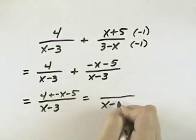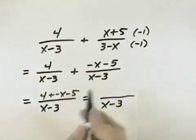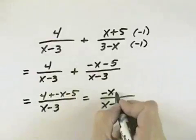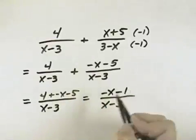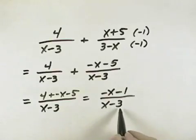Keeping my common denominator of x minus 3, I've got a negative x, and I've got a 4 minus 5, which is a minus 1. So I have negative x minus 1 over x minus 3.